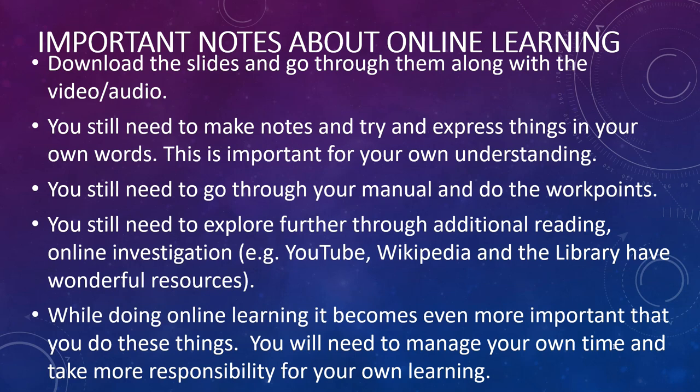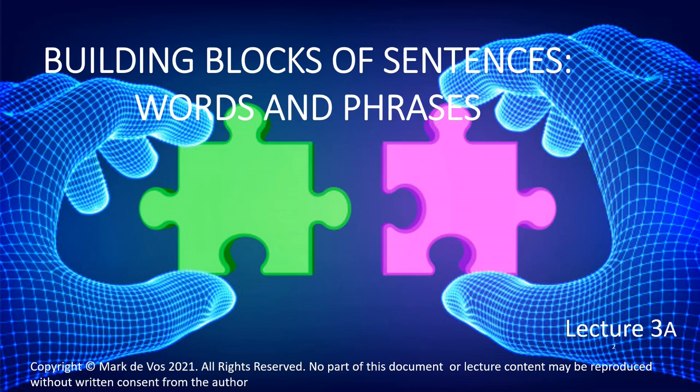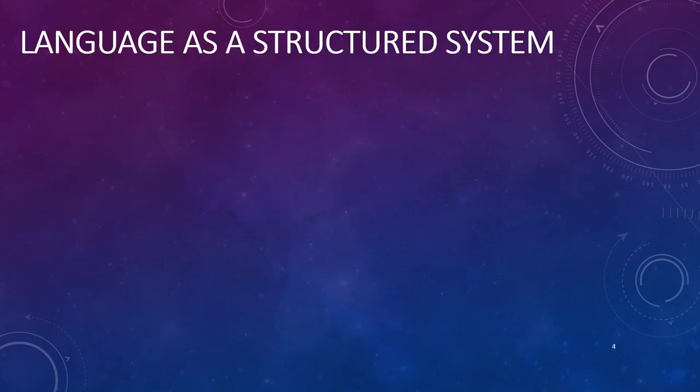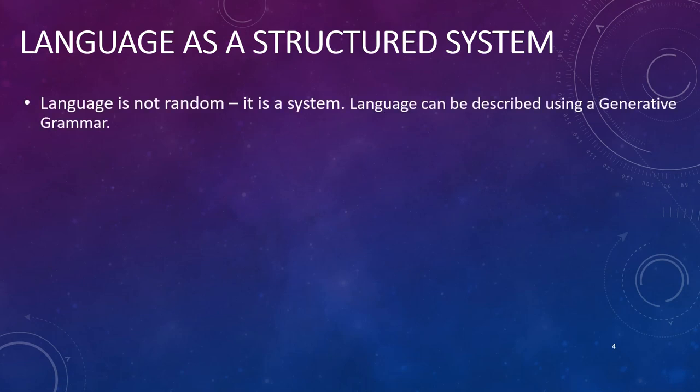The building blocks of sentences: words and phrases. In the last lecture, we learned that language is not random — it's not just a bunch of words plonked one after the other to make some meaning. Language is a system, and language can be described using a generative grammar. A generative grammar is a mental model that creates all and only the sentences of a language.